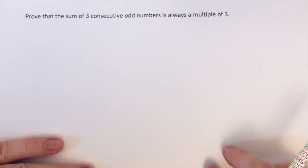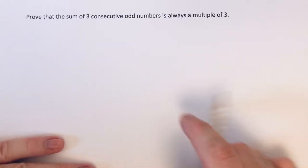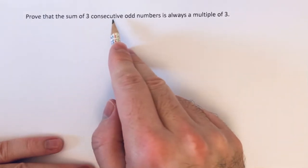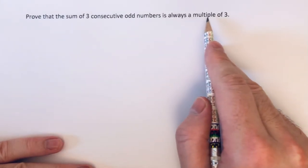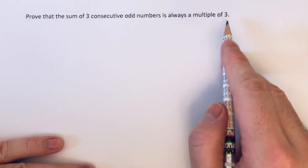Hi guys, welcome back. This is Maths3000. Today we're going to prove that the sum of three consecutive odd numbers is always a multiple of three.